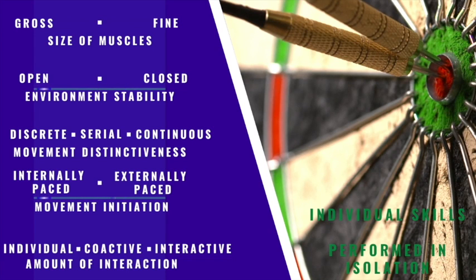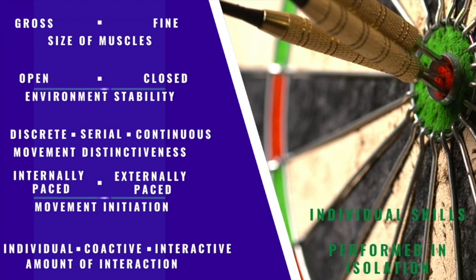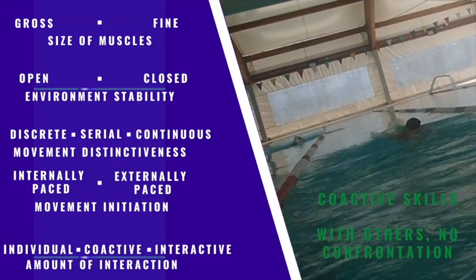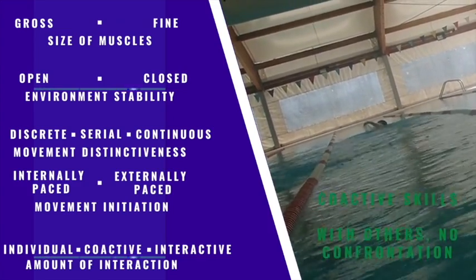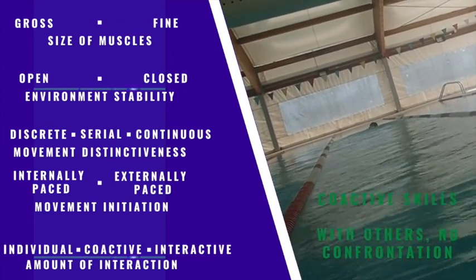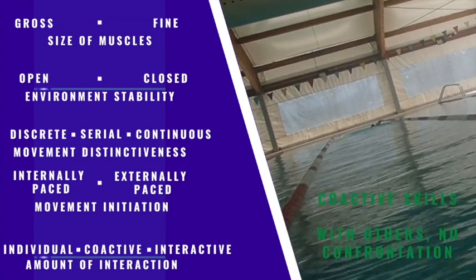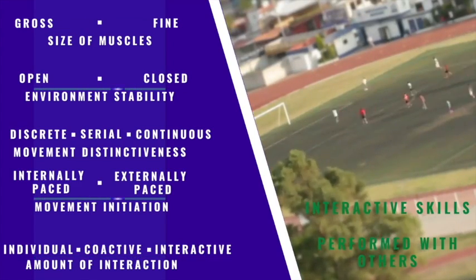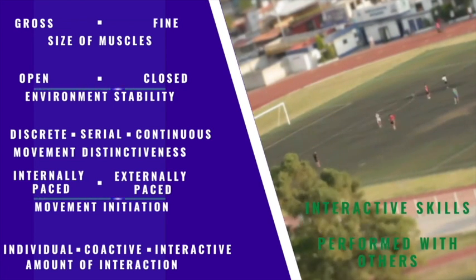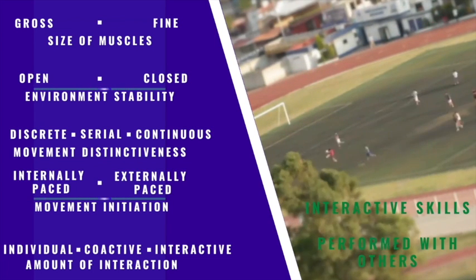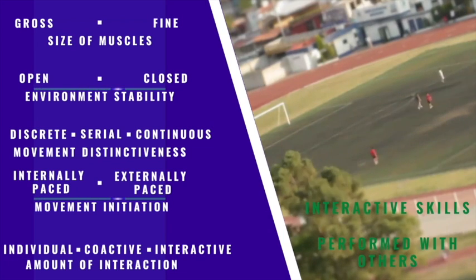Next we have amount of interaction. Individual skills are performed by you alone as an individual performer — this doesn't mean you're not in competition, but you perform the skill on your own. Co-active skills involve competing with somebody but with no confrontation — lanes separating swimmers and sprinters is the best example. An interactive skill is as it sounds: you are interacting with opponents, usually on a court or pitch, in close contact, and your decisions and skills are made because of that close contact.